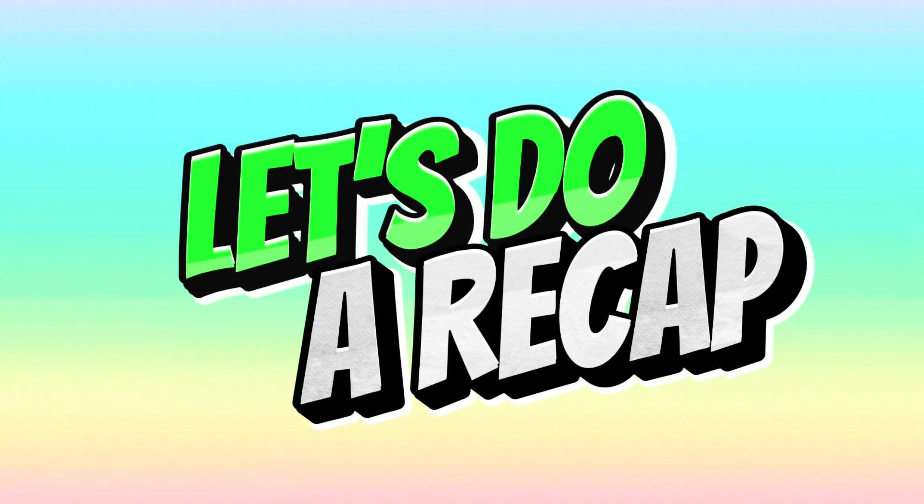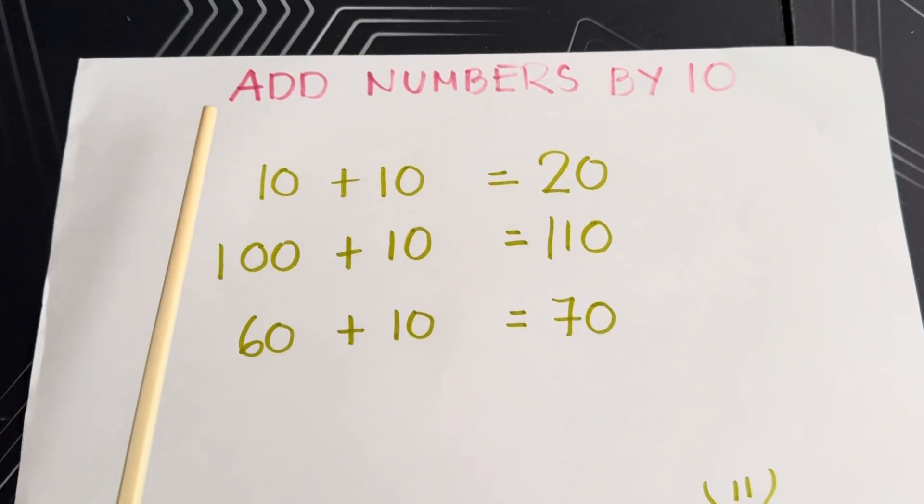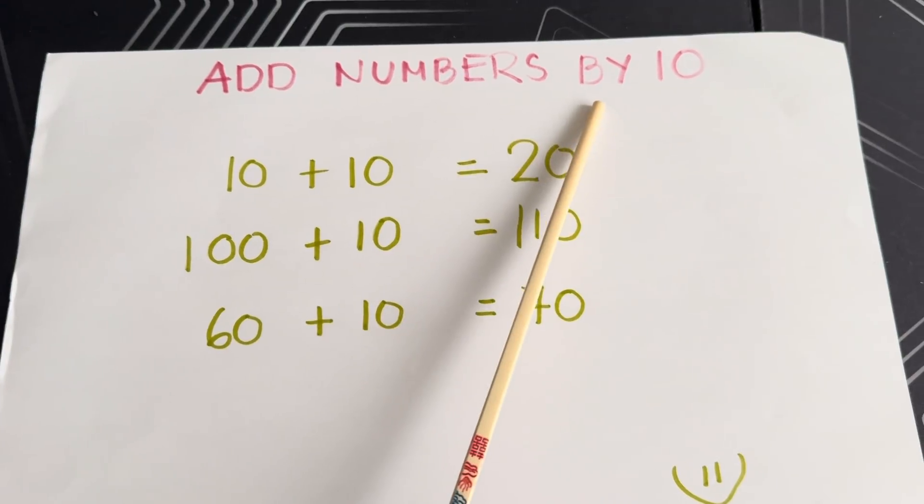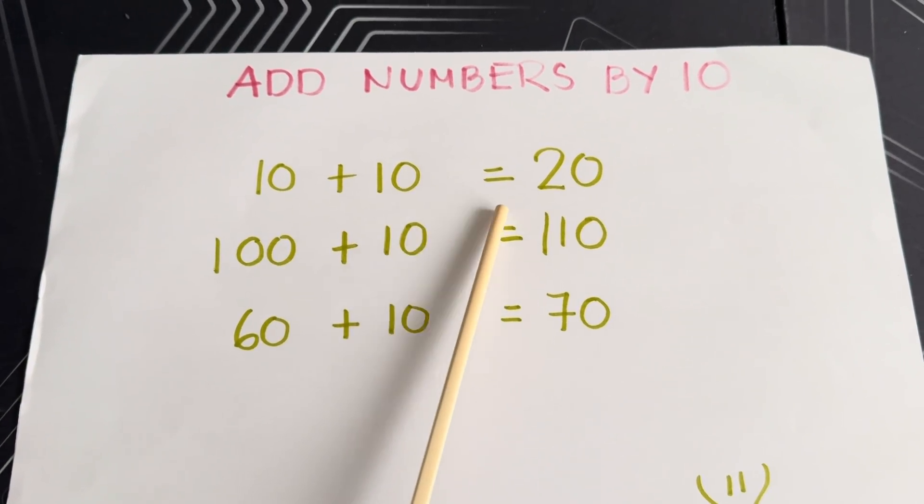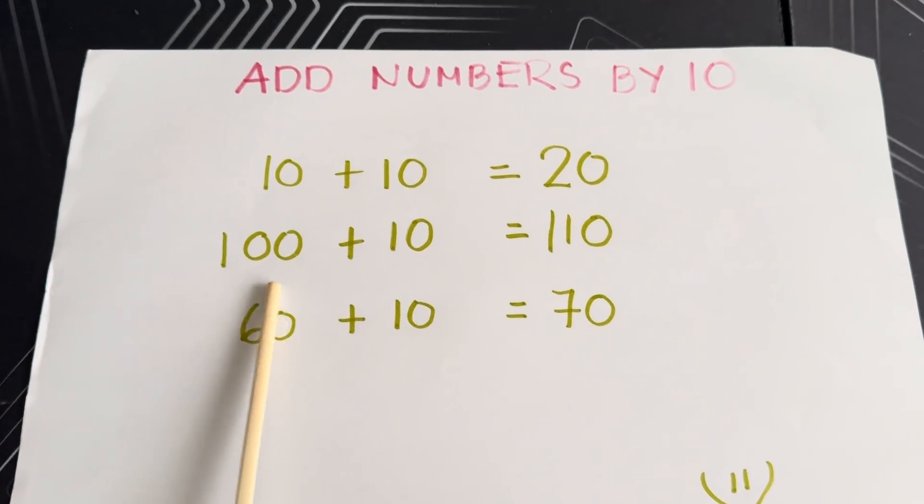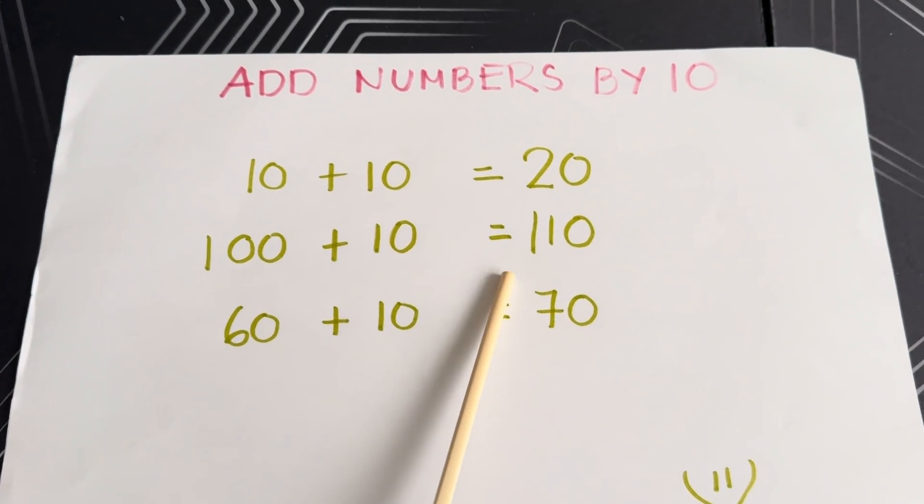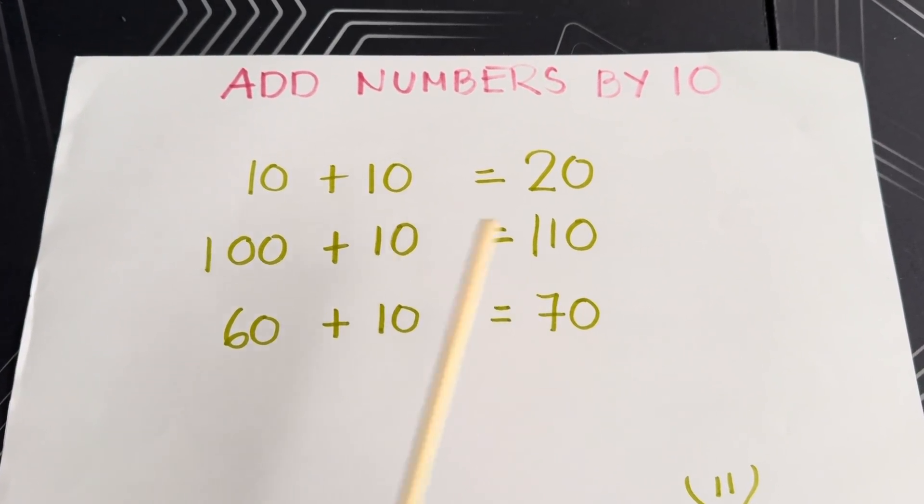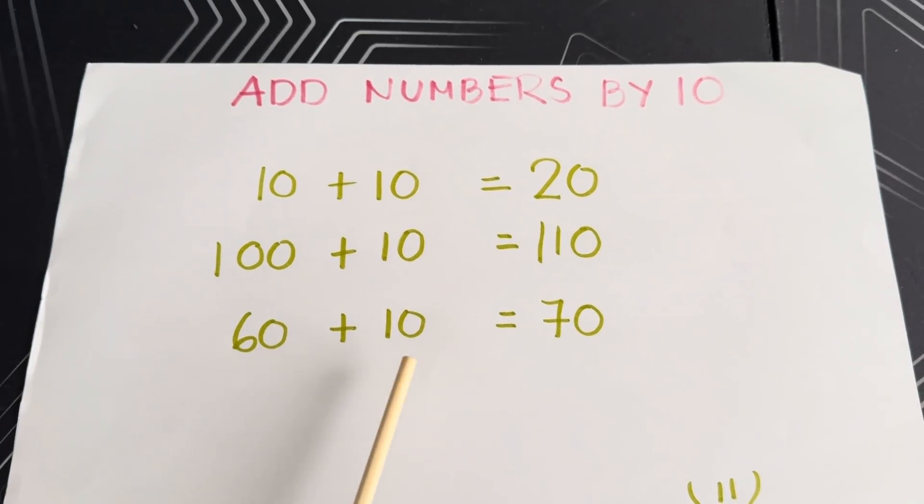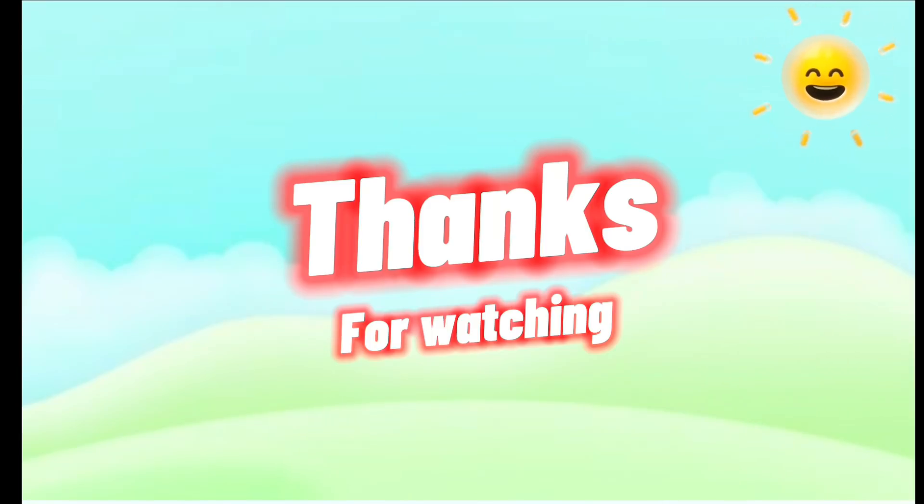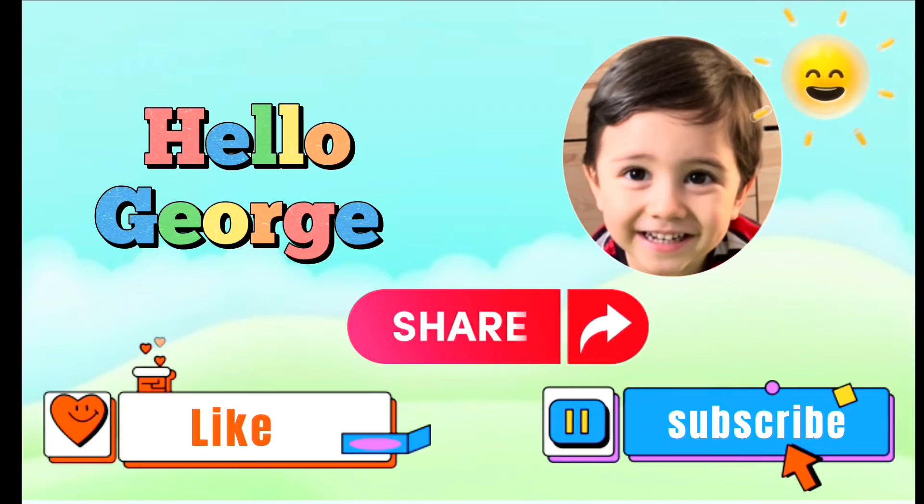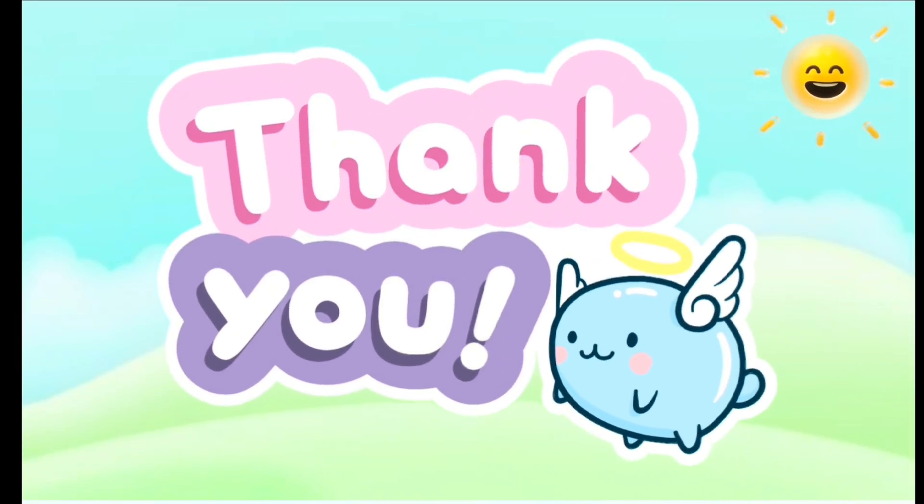And now join me and let's do a recap. Add numbers by 10: 10 plus 10 is equals to 20, 100 plus 10 is equals to 110, 60 plus 10 is equals to 70. Thanks for watching! Please don't forget to like, share, and subscribe to our channel. Hello George, and thanks for all the support!